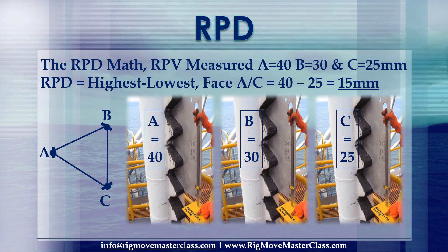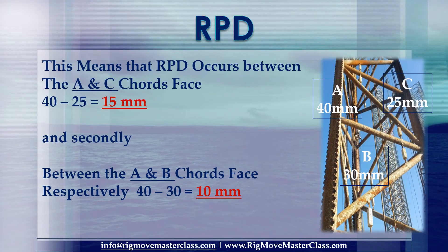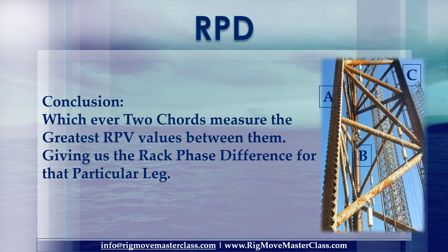RPD — the RPD math. How is RPV measured? RPD occurs between the A and C chord faces: 40mm minus 25mm equals 15mm. And between the A and B chord faces: 40mm minus 30mm equals 10mm. Conclusion: whichever two chords measure the greatest RPV values between them gives us the rack phase difference for that particular leg.